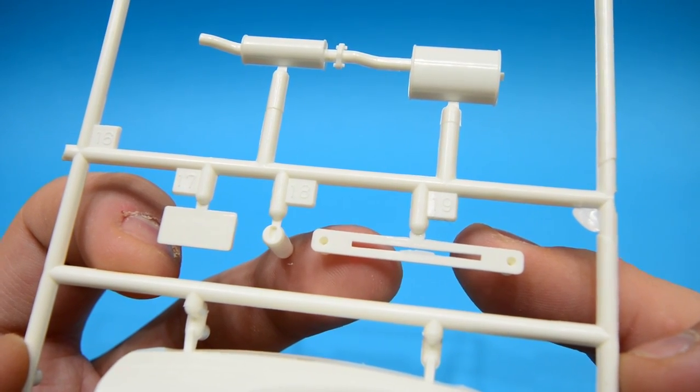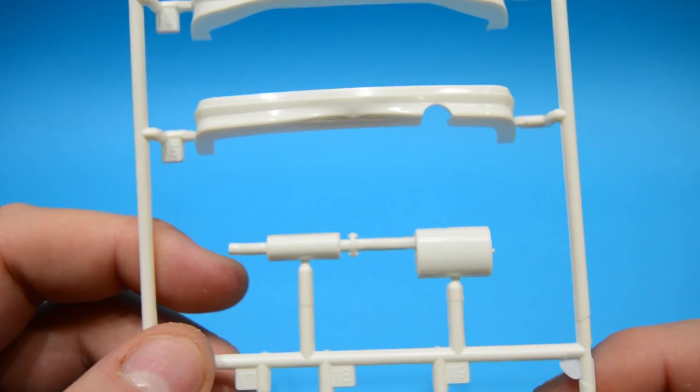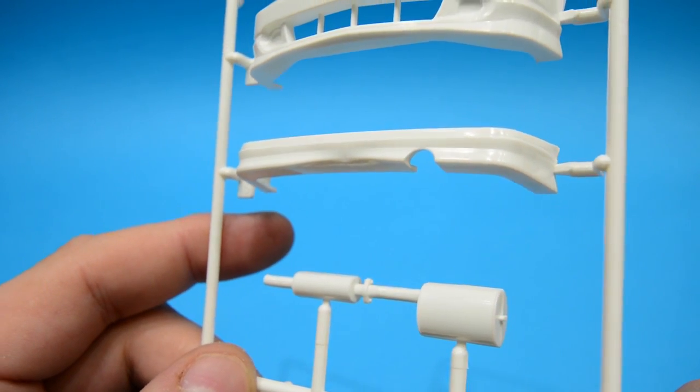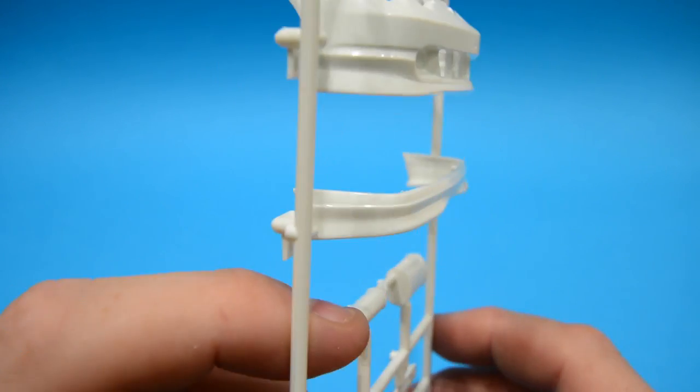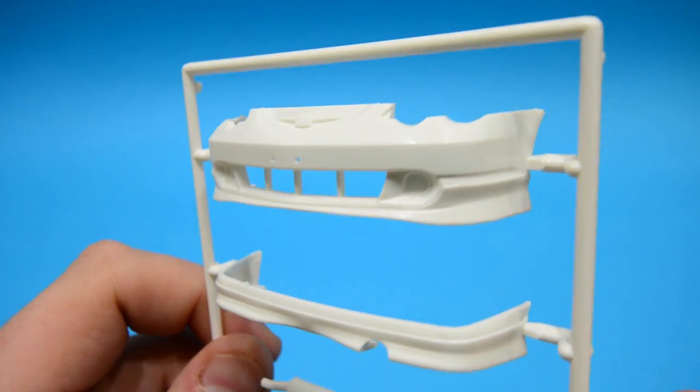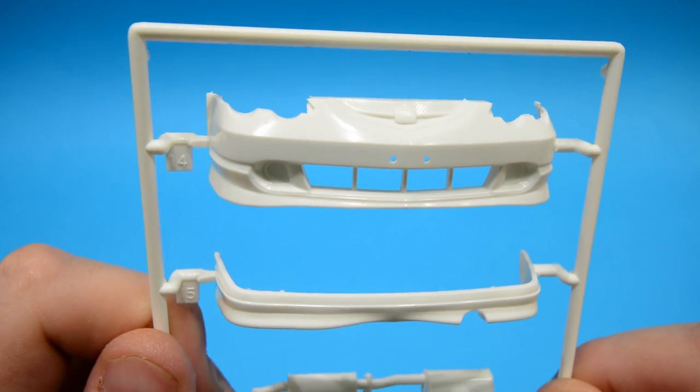You've got your number plate, exhaust pipe, the actual exhaust itself, and there's your rear apron. Remember me telling you it's a little bit of a funny fit? It does need a little bit of loving. You've then got the front bumper with a molded-in grille.